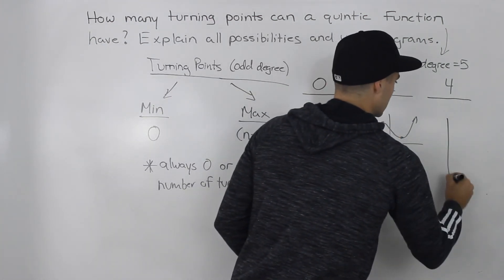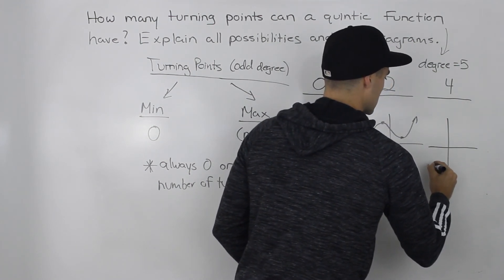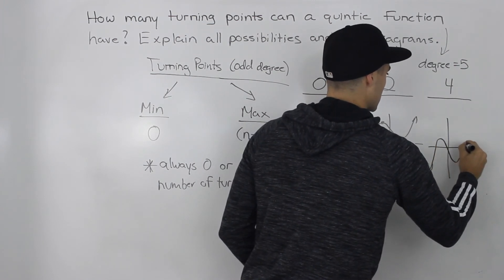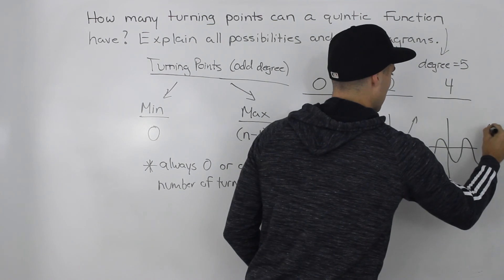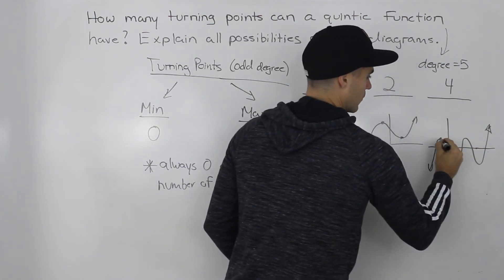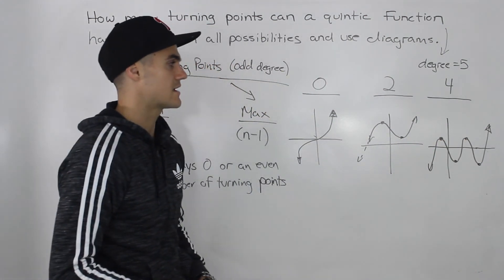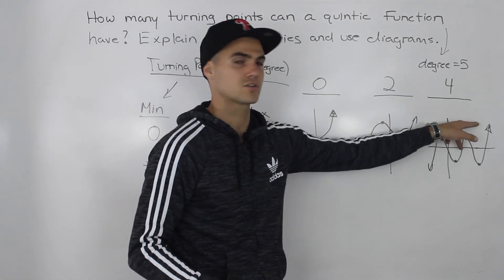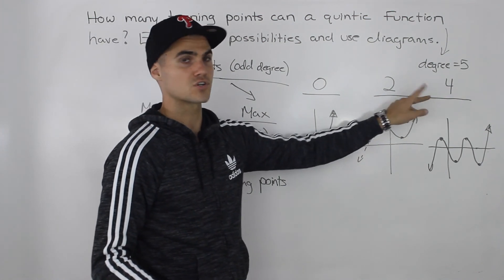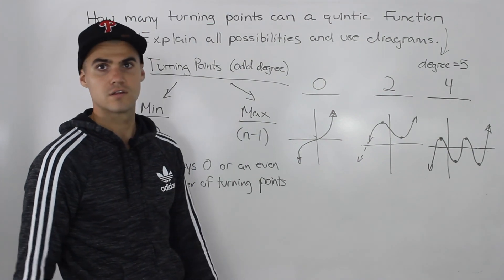And lastly, four turning points. The way that can look is: one, two, three, four turning points. It still has that end behavior from quadrant three to quadrant one. Those are the three cases for turning points that can happen for a quintic function, and we showed it with diagrams.